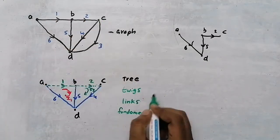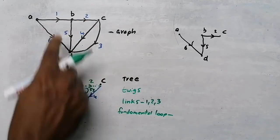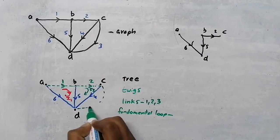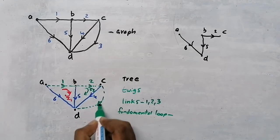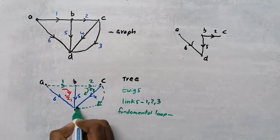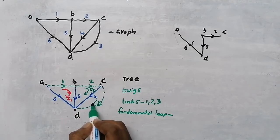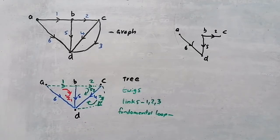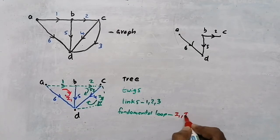One more link remains — link 3. I draw link 3, and as soon as I do, it forms a closed path — a closed loop. If it is a closed loop, there will be a loop current, and the direction of the loop current will be in the same direction as the link current. I name it I3. So there are three loops: I1, I2 and I3. Those loops are fundamental loops.